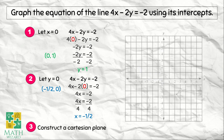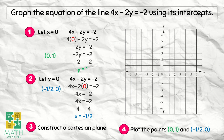We construct a Cartesian plane and plot the points (0, 1) and (-1/2, 0). First, we plot (0, 1): x is 0 and y is positive 1, so we place that point. Next, (-1/2, 0): x is negative one-half, and y is 0, so that's the point. We connect the two dots, and that's our graph for the equation 4x minus 2y is equal to negative 2.